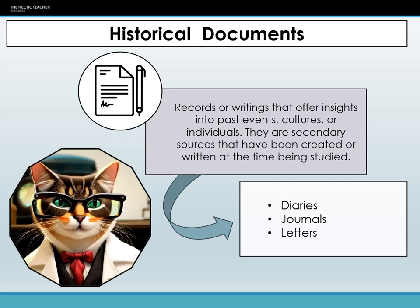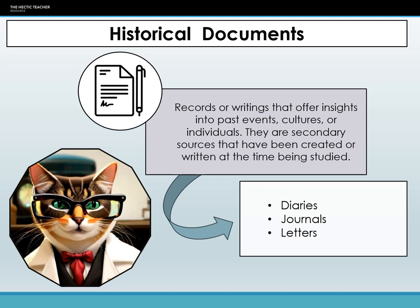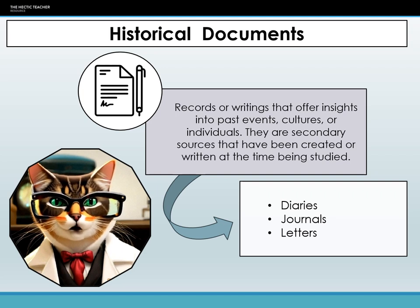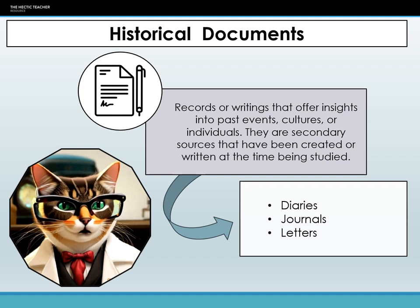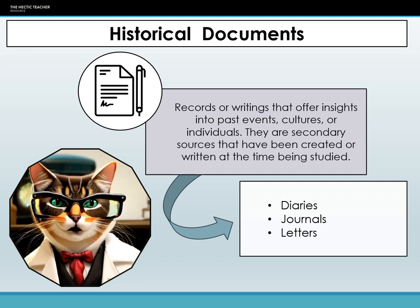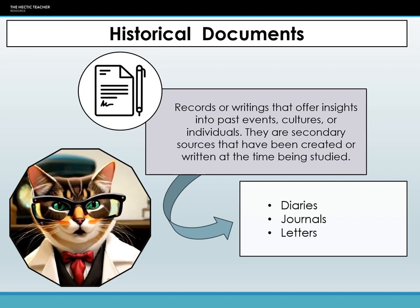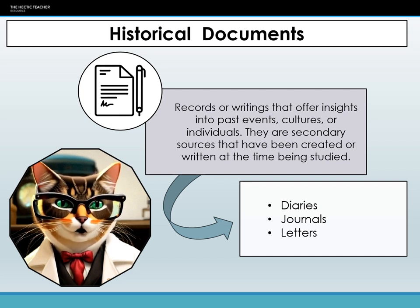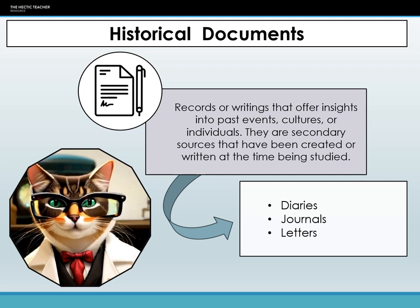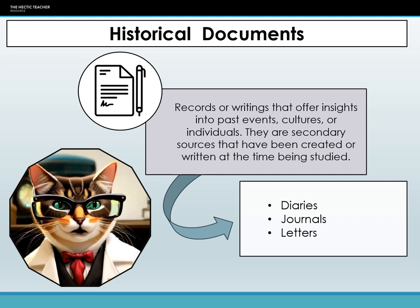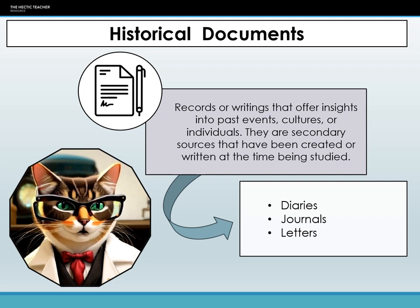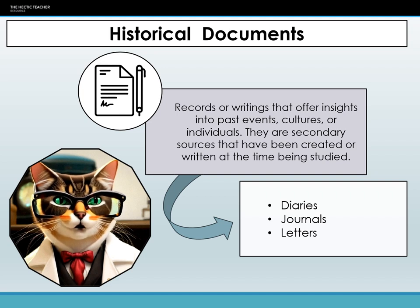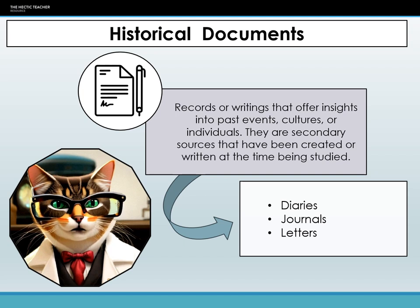Examples of historical documents are manifold. One might consider ancient manuscripts, which detail the cultural, religious, and social practices of a bygone era. There are also governmental and administrative records, such as censuses, tax records, or court proceedings, which offer a systematic understanding of societal structures and hierarchies. Newspapers and periodicals from the past can provide a daily snapshot of life, illuminating societal concerns, opinions, and events of the time. Personal letters, though more intimate, can reveal the nuances of interpersonal relationships, aspirations, and challenges faced by individuals in a given society. Similarly, photographs, even though visual, tell a story of the past, capturing moments that represent broader societal realities.